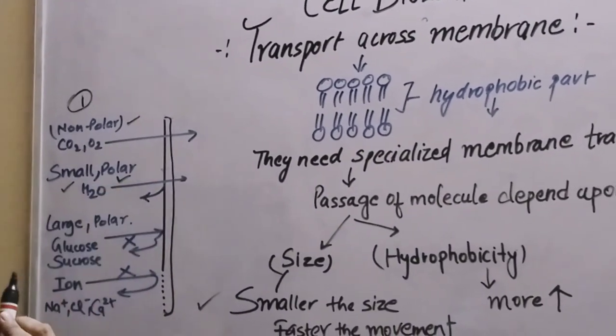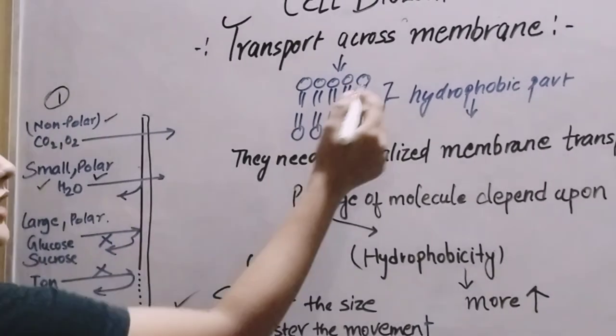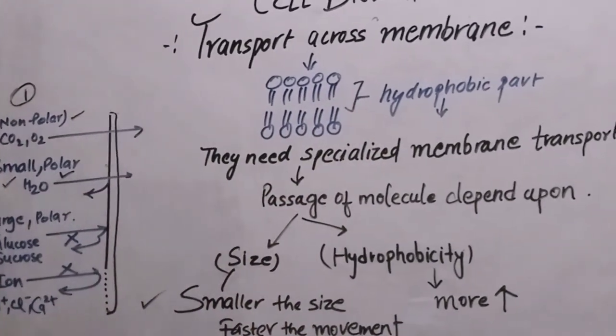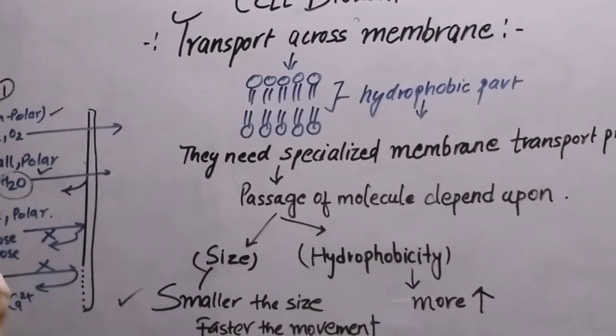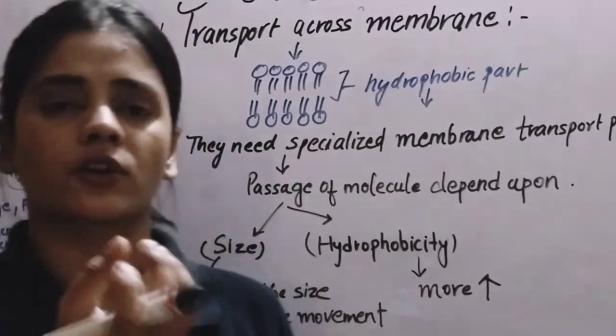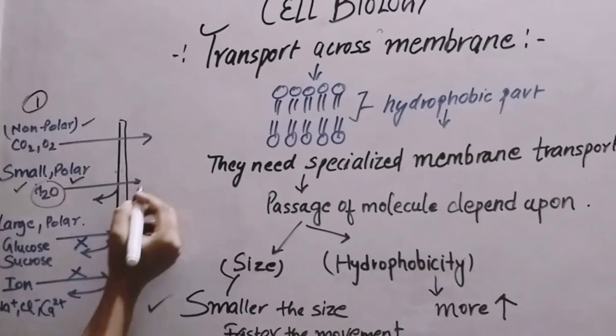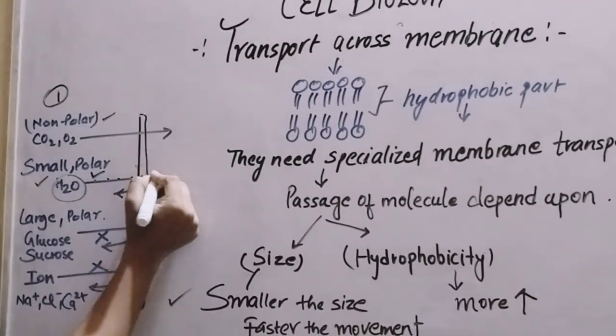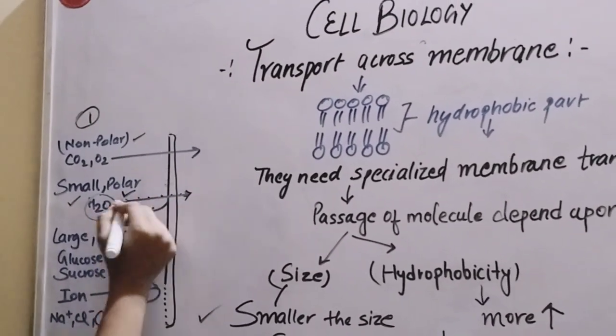But water is polar. Polar molecules cannot be passed easily. However, water shows some permeability, so with the help of transport proteins, it can pass. That's why it is somewhat permeable.